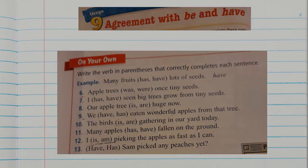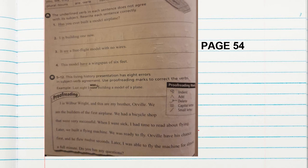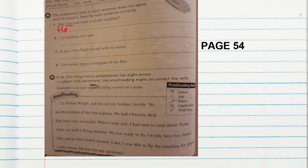Go to the next activity on page 54 in your workbook clues. It says: the underlined verb in each sentence does not agree — that means it is incorrect — with the subject. Rewrite the sentence correctly. Number one: And it has — so has is incorrect. The subject is you. Which form of the verb have is correct? For you we use have. Write: Have you ever built a model airplane?